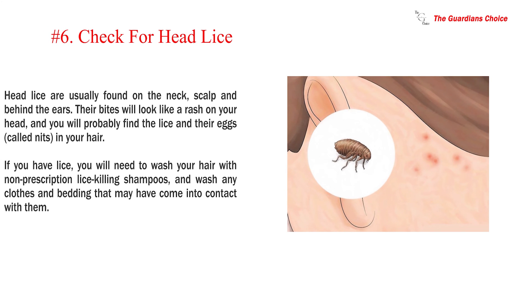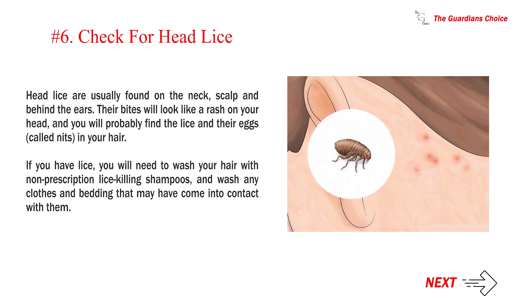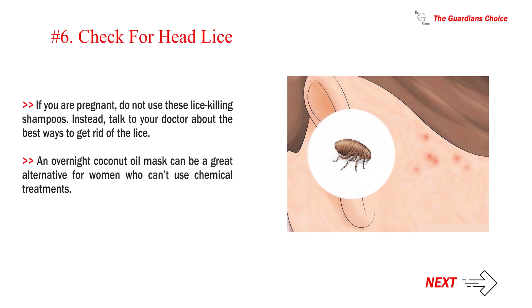Number 6: Check for head lice. Head lice are usually found on the neck, scalp, and behind the ears. Their bites will look like a rash on your head, and you will probably find the lice and their eggs, called nits, in your hair. If you have lice, you will need to wash your hair with non-prescription lice-killing shampoos, and wash any clothes and bedding that may have come into contact with them. If you are pregnant, do not use these lice-killing shampoos. Instead, talk to your doctor about the best ways to get rid of the lice. An overnight coconut oil mask can be a great alternative for women who can't use chemical treatments.